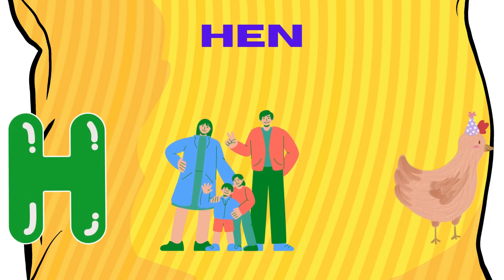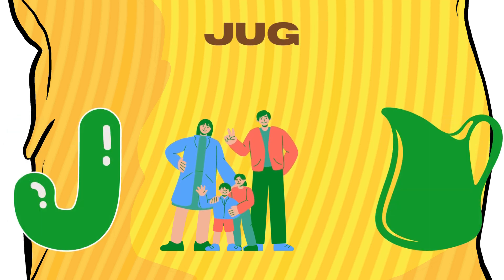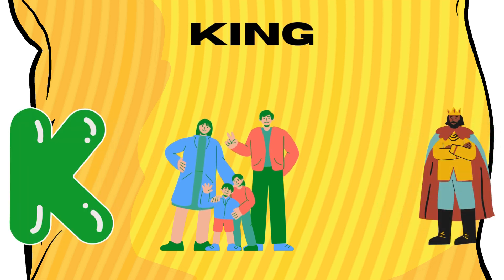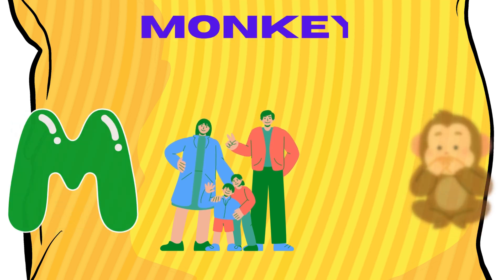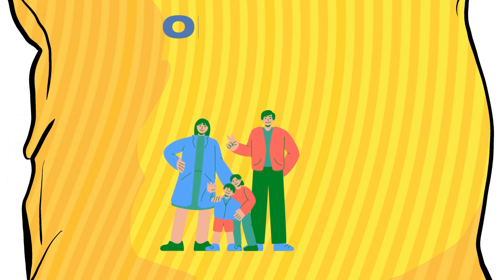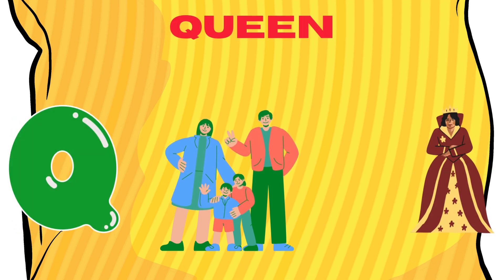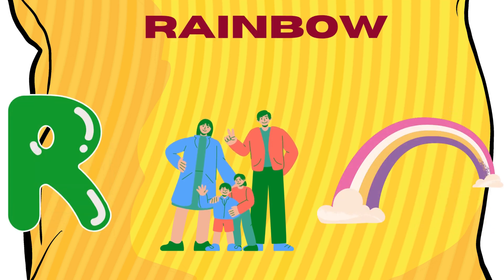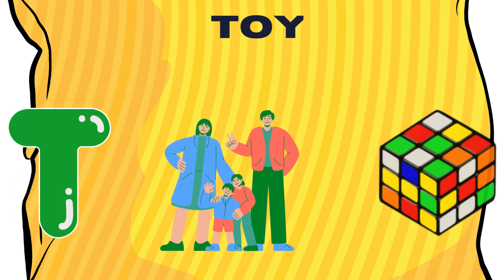H for hen, I for ice cream, J for jug, K for king, L for lion, M for monkey, N for nurse, O for orange, P for parrot, Q for queen, R for rainbow, S for star, T for...